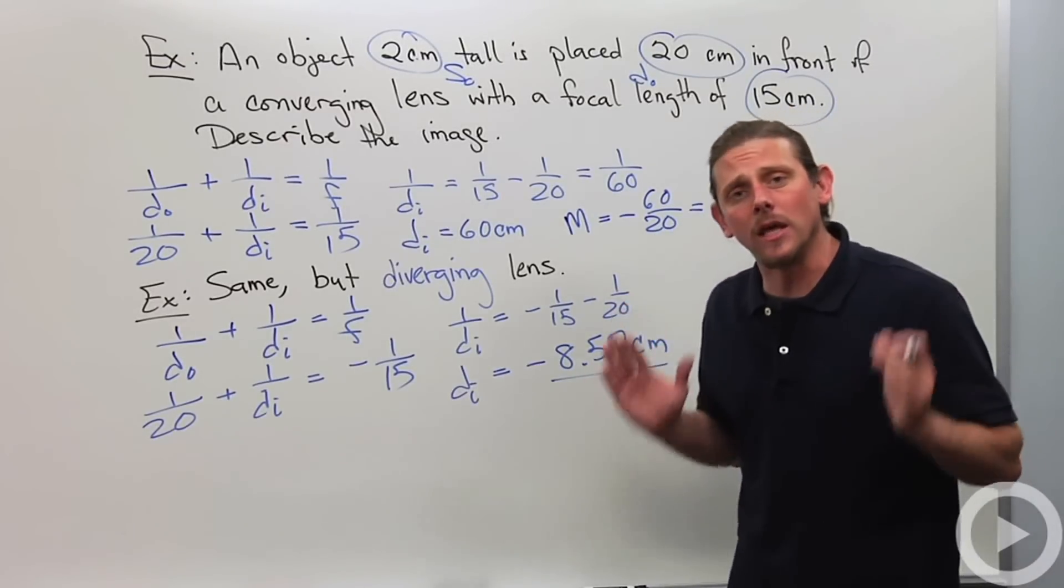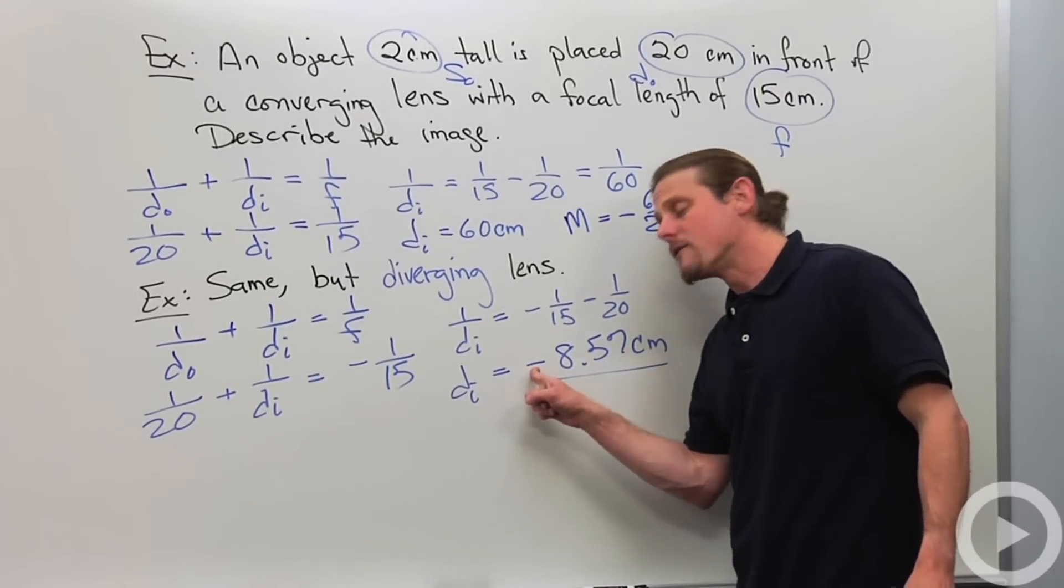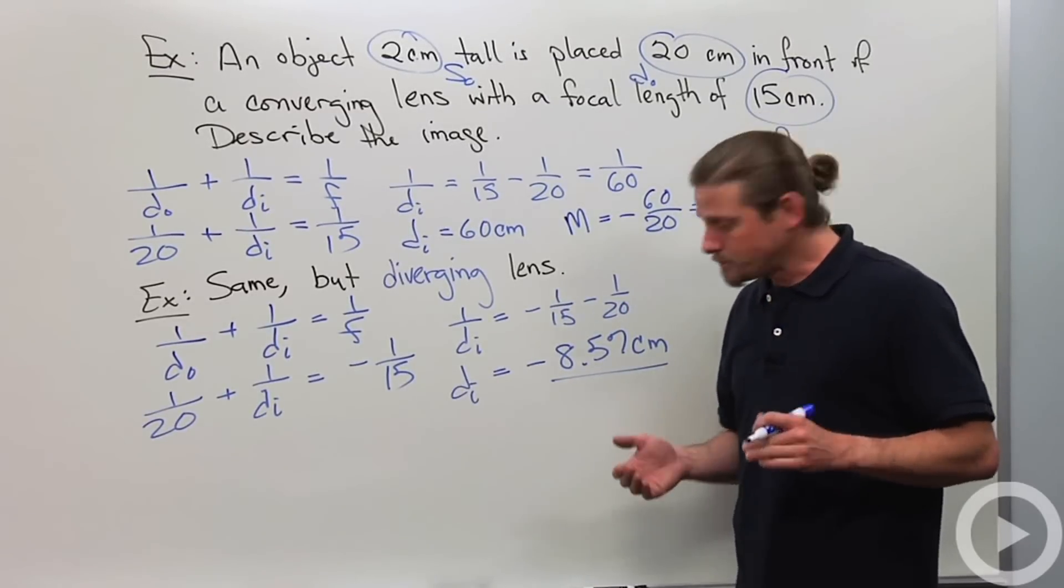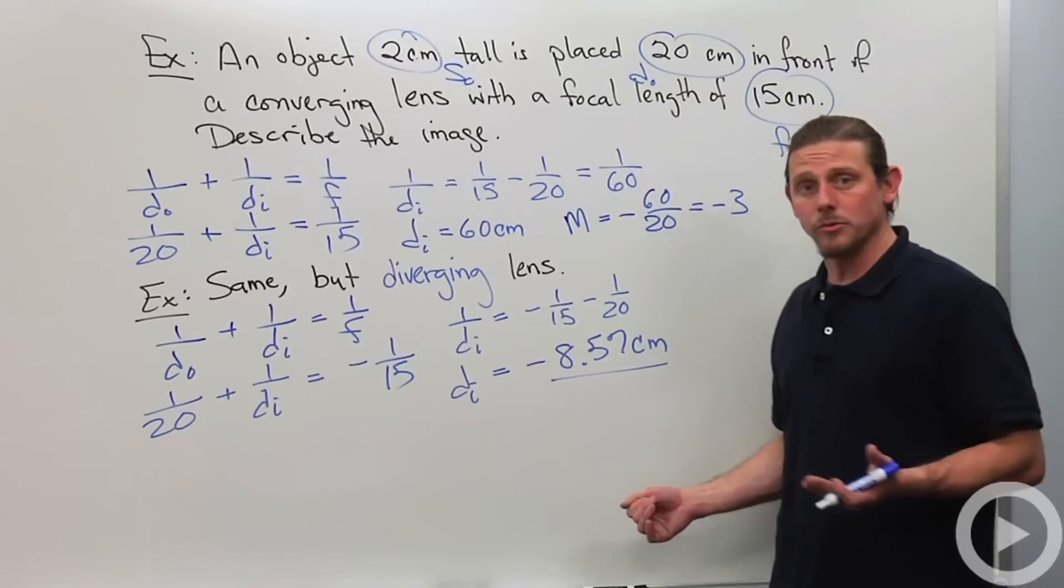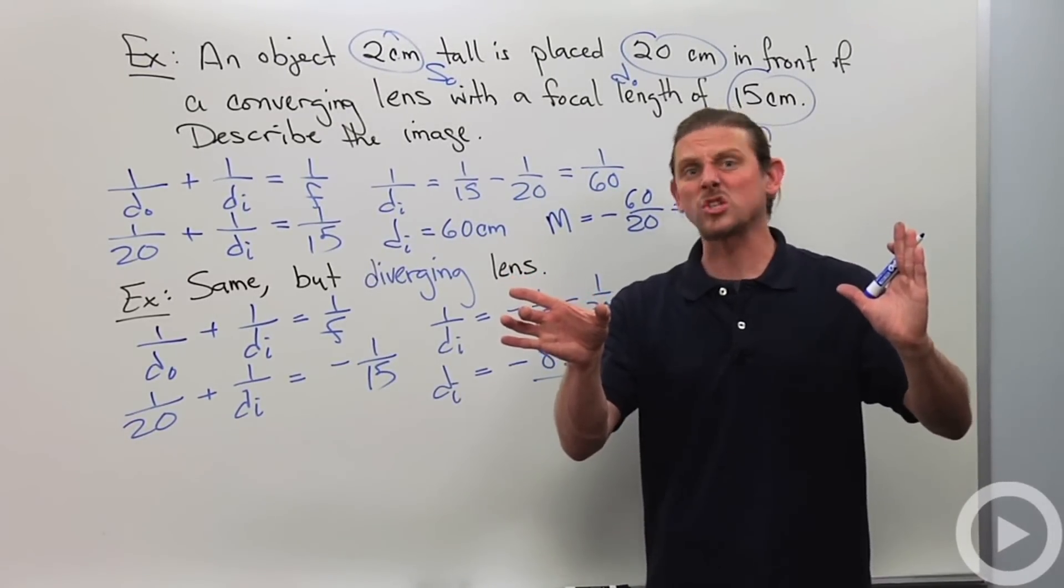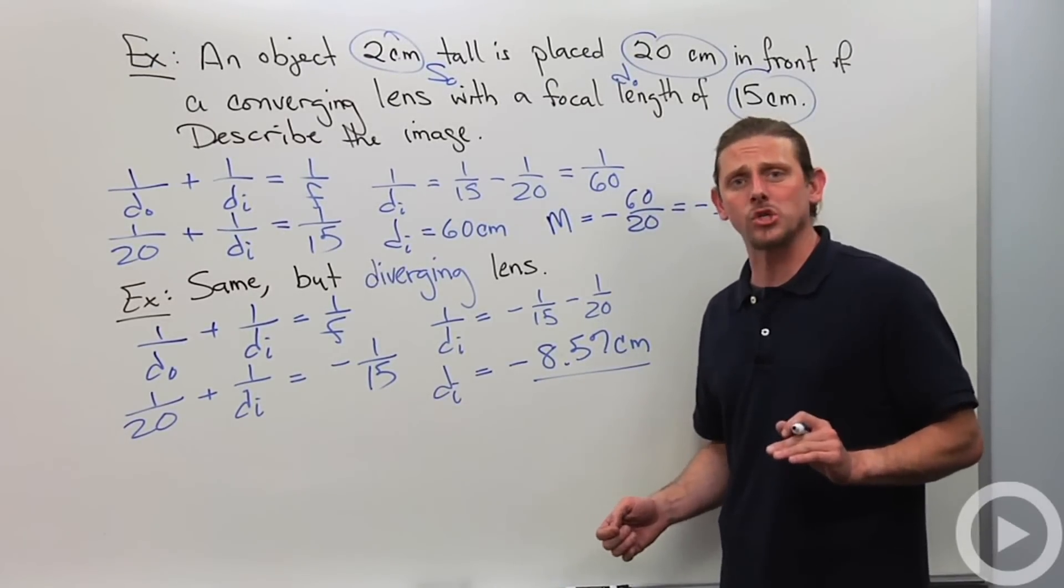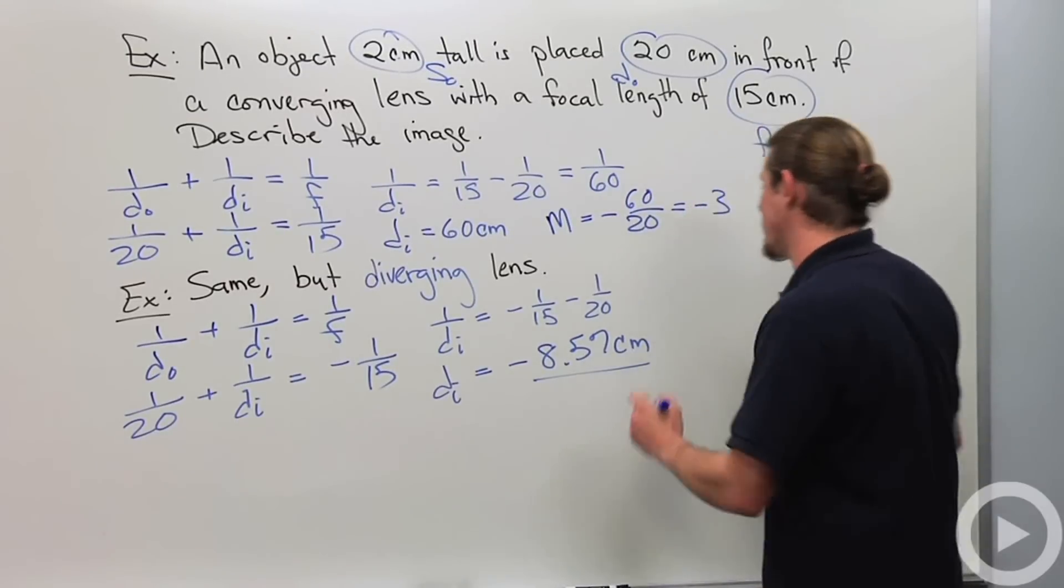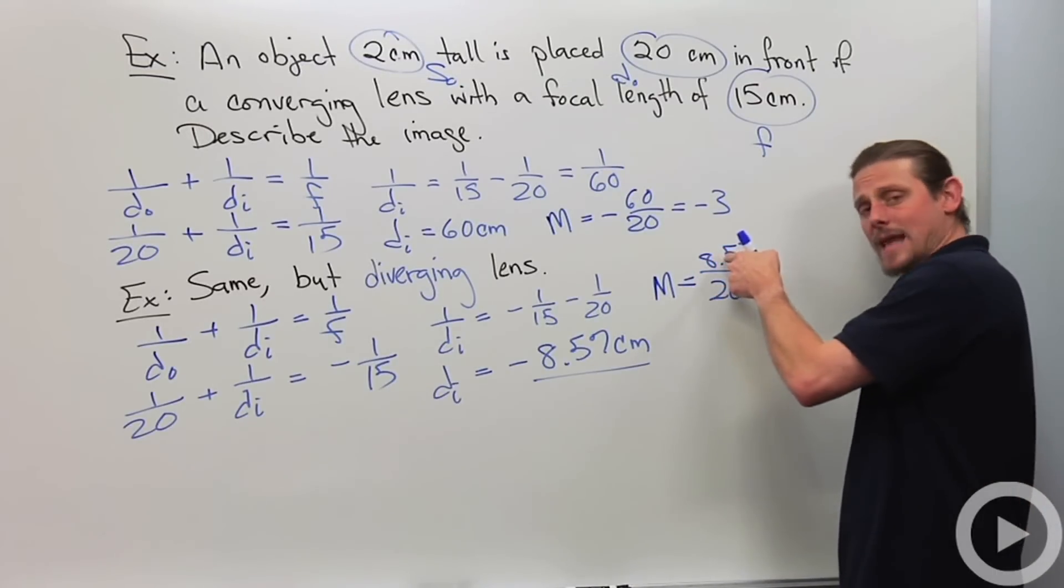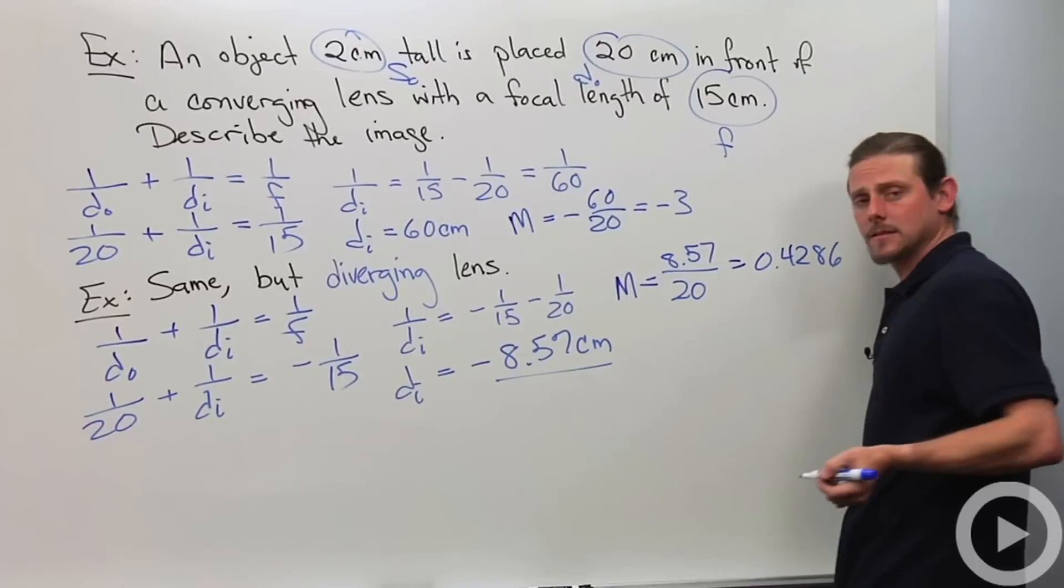So now what we would say is that the image appears on the same side of the lens as the object. It is a virtual image. It is 8.57 centimeters away from the lens, which is much closer to the lens than the object. Now, nice, easy thing to remember is that whatever's closer will be smaller. So since this image is closer to the lens, it's going to be smaller. And that means the magnification will be less than 1.